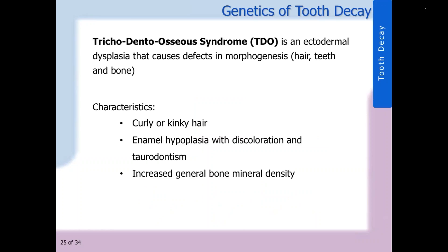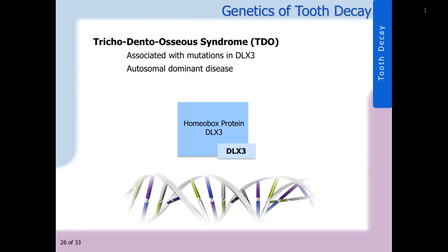Tricho-dento-osseous syndrome, known as TDO, is an ectodermal dysplasia that causes defects in hair, teeth, and bone. TDO can be characterized by curly or kinky hair, enamel hypoplasia with discoloration and taurodontism, and increased general bone mineral density. TDO is also associated with mutations in DLX3. The protein coded from the DLX3 gene is involved in morphogenesis. TDO is mostly an autosomal dominant disease, so once again the child has a 50% chance of inheriting the gene if a parent is affected.